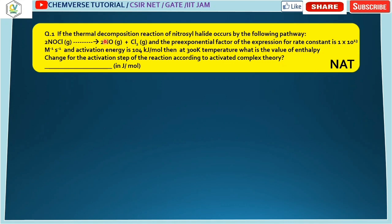Let's begin with the first question. The thermal decomposition reaction of nitrosyl chloride (NOCl) occurs by the following pathway: 2 NOCl → 2 NO + Cl₂. The pre-exponential factor A from the Arrhenius equation k = A·e^(−Ea/RT) is given, and the activation energy is 104 kJ/mol. At 300 K, what is the enthalpy change for the activation step according to activated complex theory?